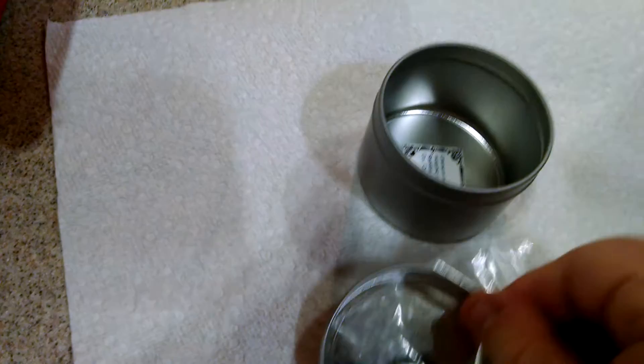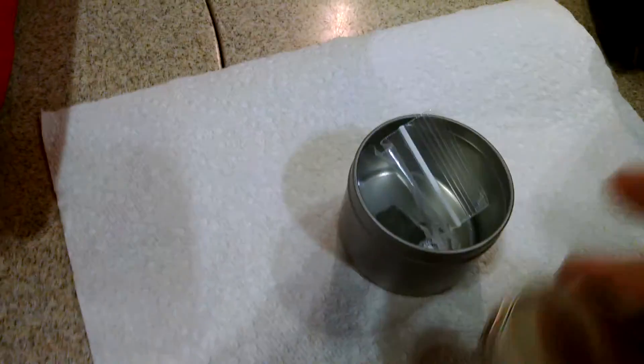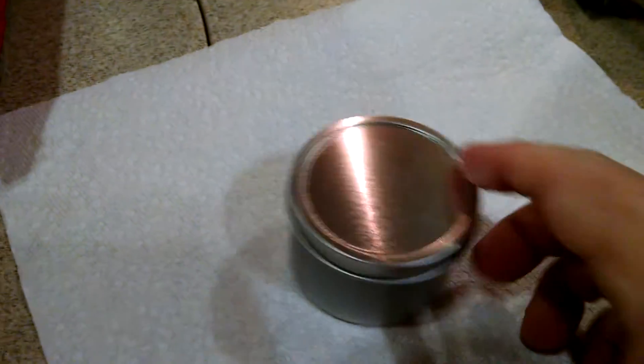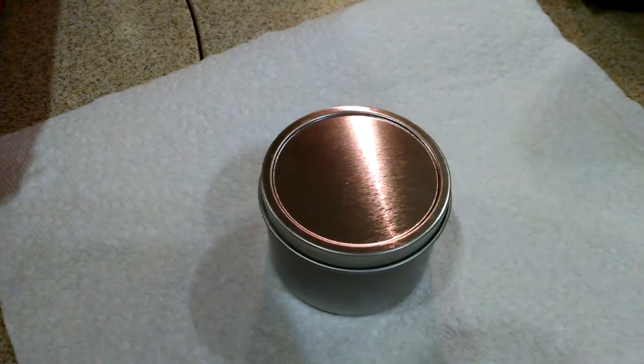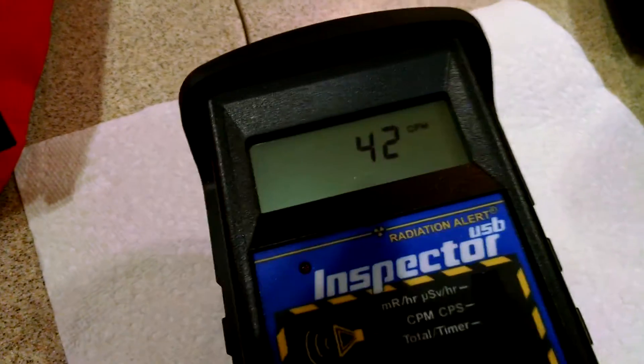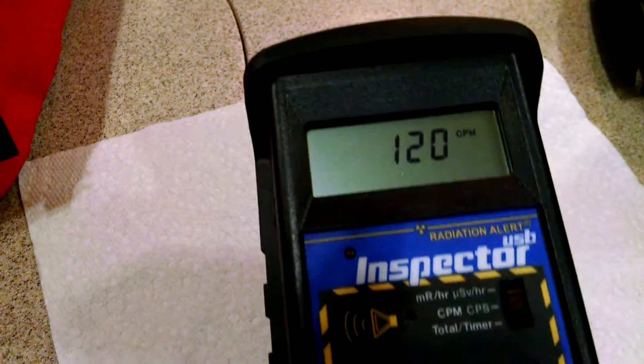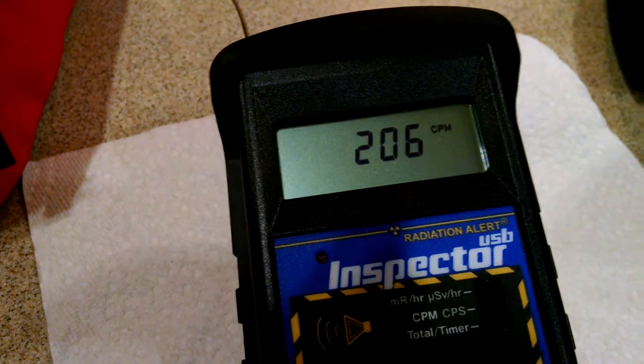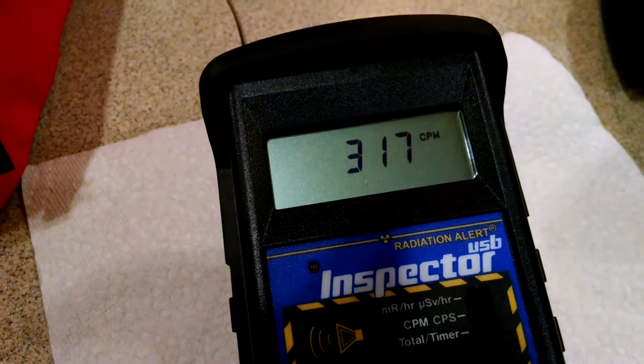And now, what I am going to do is take the sample, put it back inside the can, and put the lid on the can, and then demonstrate that even with the lid on the can, it is still getting beta and gamma radiation.